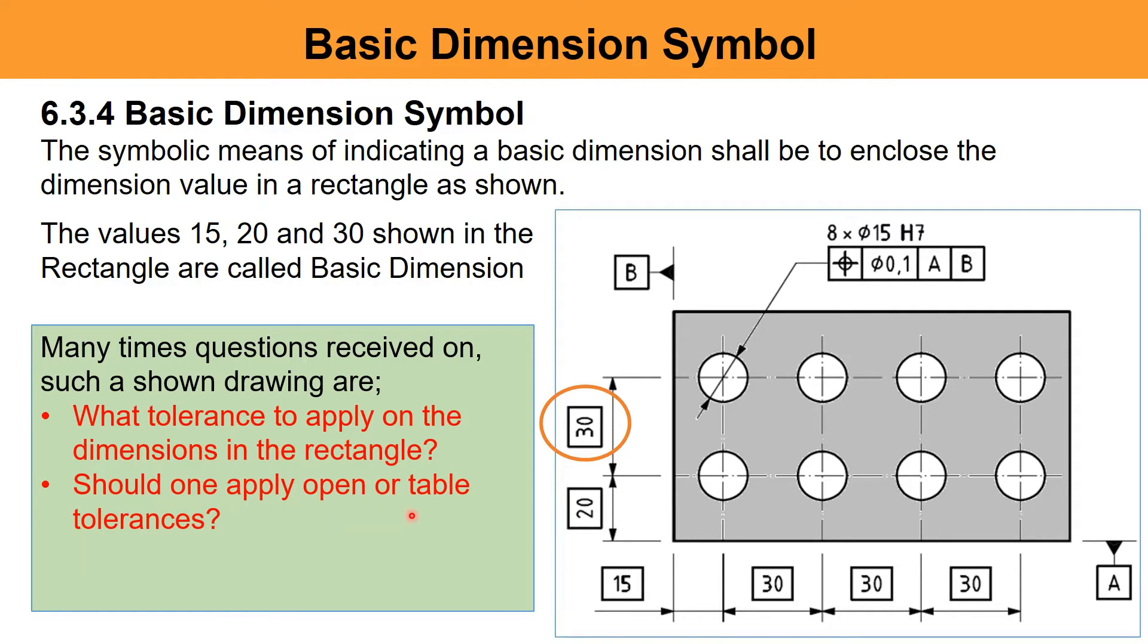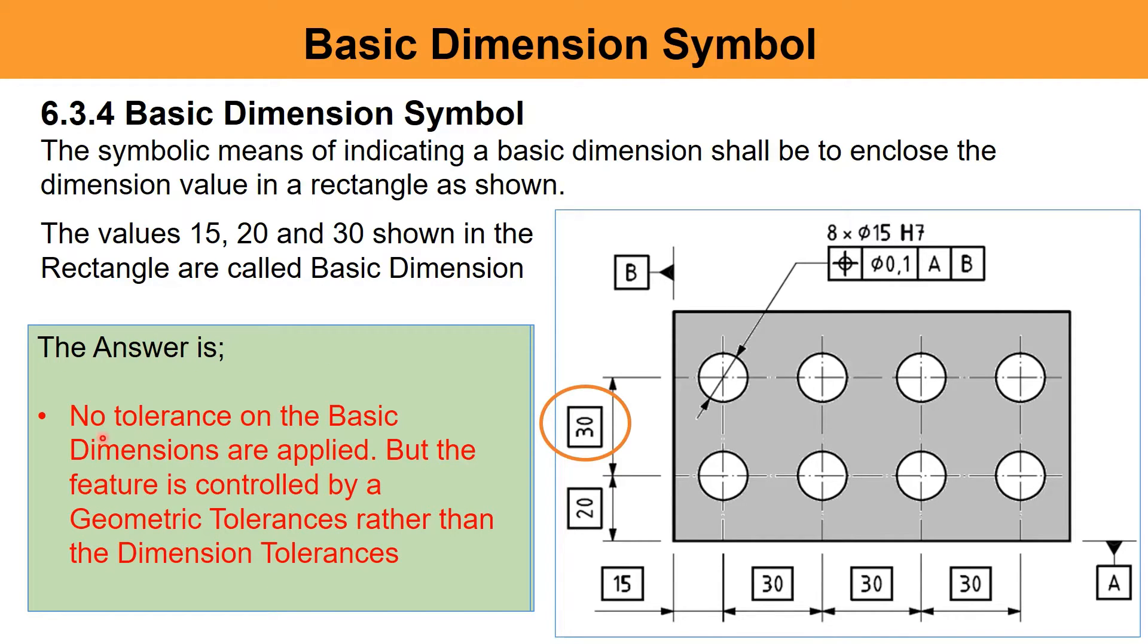Should one apply open or tabular tolerances? Are basic dimensions need not to be inspected? The answer is no tolerances on the basic dimensions are applied. But the feature is controlled by geometric tolerances rather than the dimension tolerances.